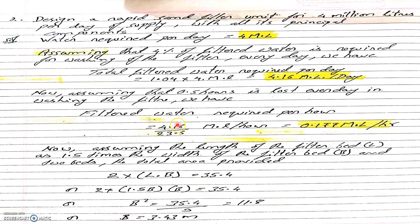We are assuming that 4% of the water may be required for backwashing, and that 0.5 hours per day is lost in washing. So the total water required per day equals 1.04 × 4 = 4.16 million liters per day. The filtration unit is taken out for half an hour each day for cleaning. Therefore, the rate of filtration per hour equals 4.16 million liters divided by 23.5, giving 0.177 million liters per hour.